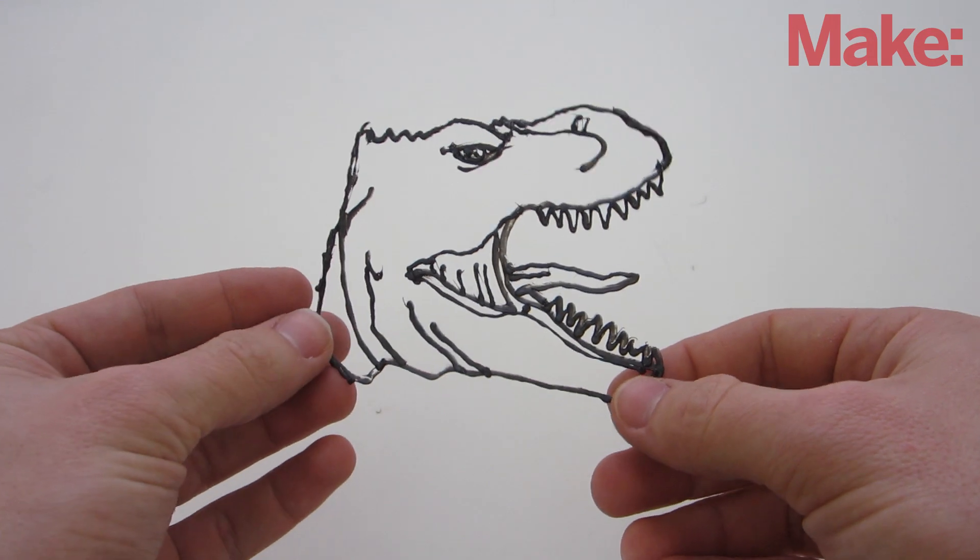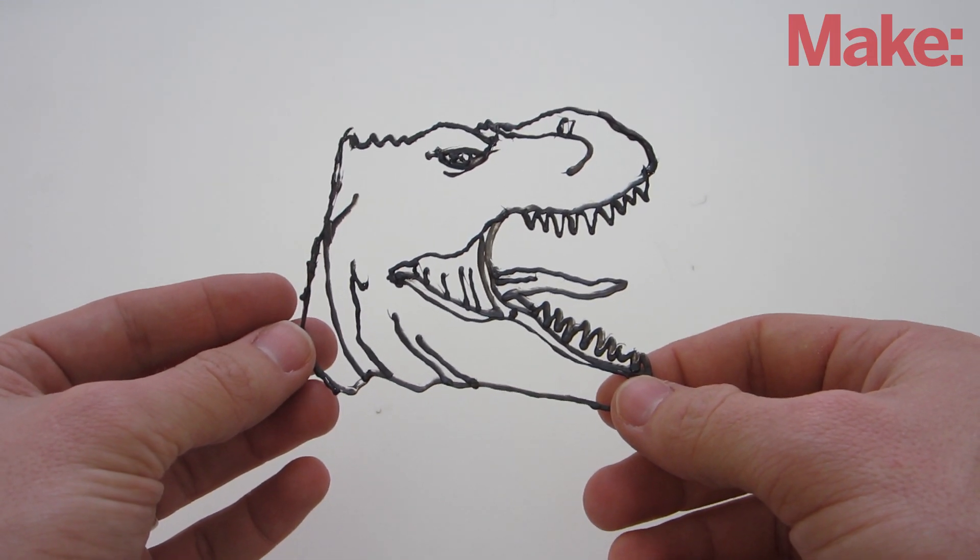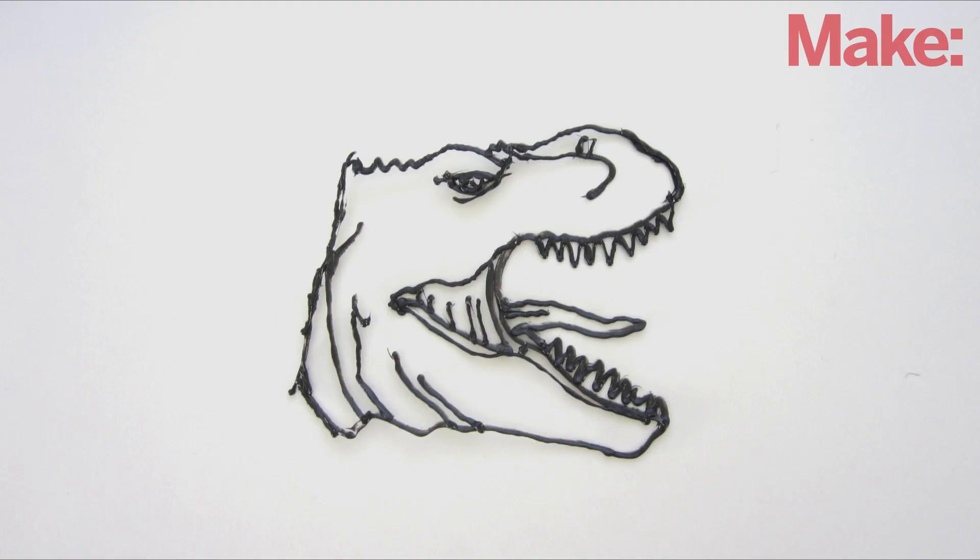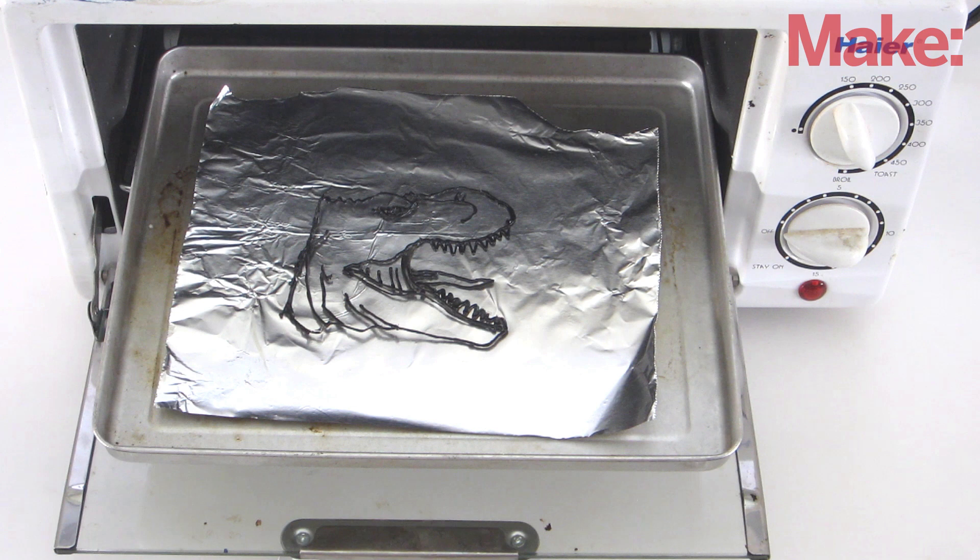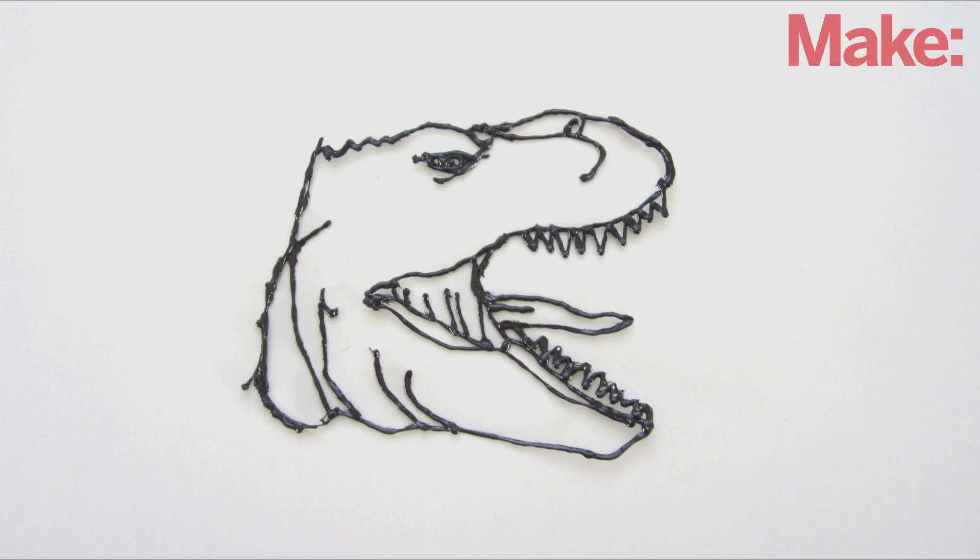Then, gently peel the plastic off the paper. You can now use a pair of scissors or wire cutters to trim off any rough edges. After doing this, if you feel that the lines of your sketch are still a little too rough, you can stick it in a toaster oven for a few minutes. Set the temperature just above the melting point for your filament. This will partially remelt the plastic and soften up the edges.